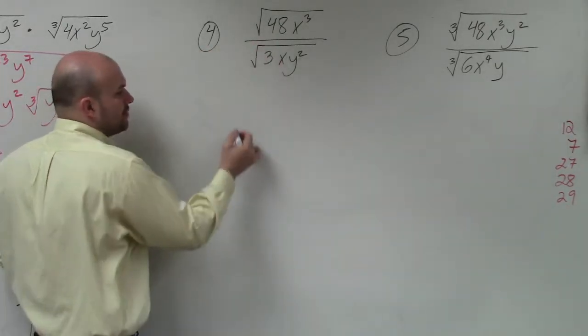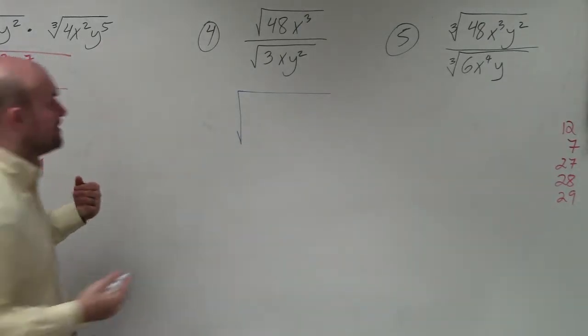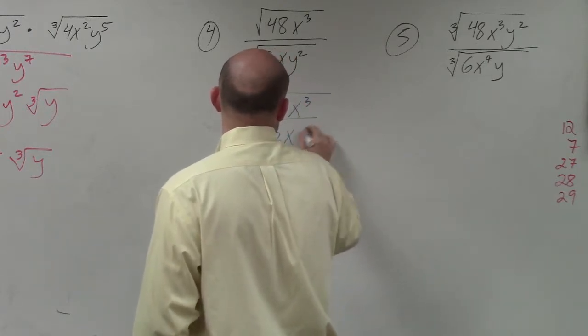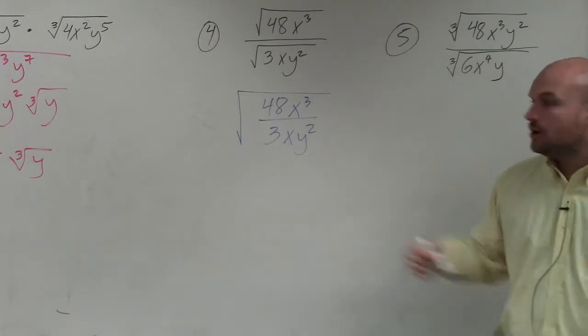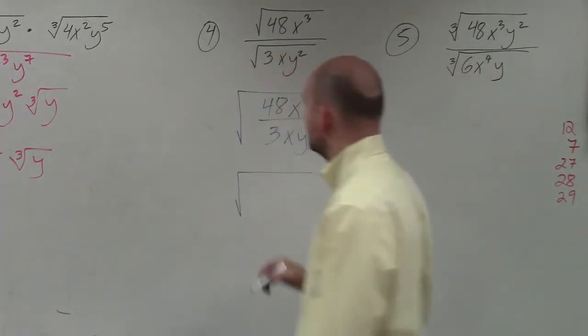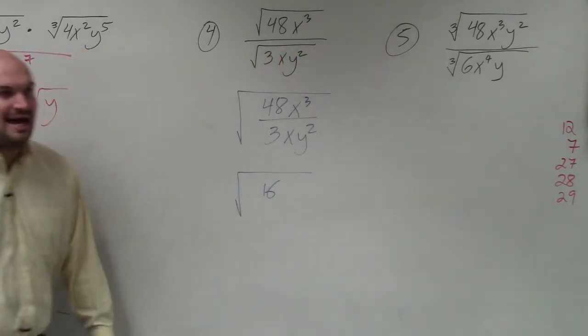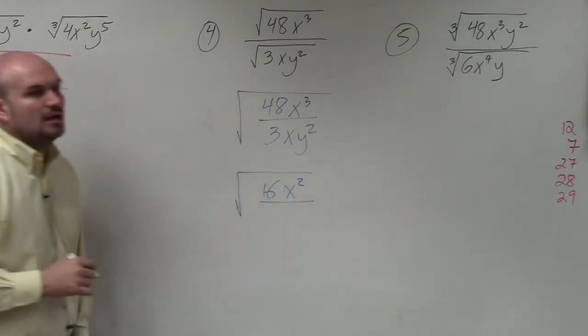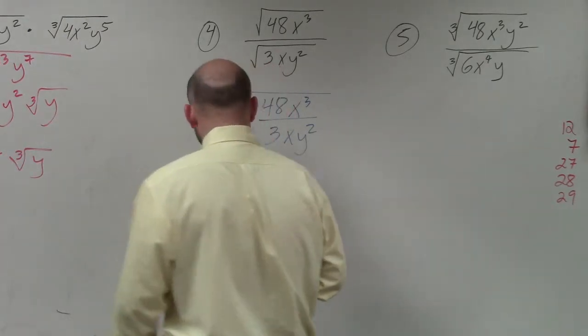If we're going to use our rules, the rule I said is when you're dividing two radical expressions, you can rewrite them over the same radical. So now, what's 48 divided by 3? 16. What's x cubed divided by x? X squared. And y squared remains on the bottom.